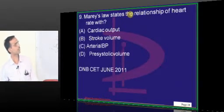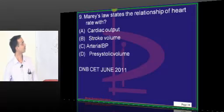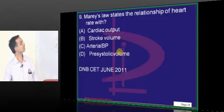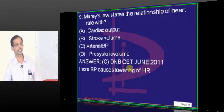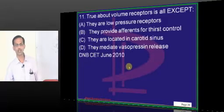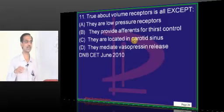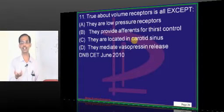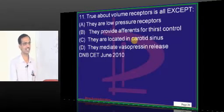Marey's law states the relationship of heart rate with arterial blood pressure — increased BP causes lowering of heart rate, that is Marey's law. What is Murphy's law? It has nothing to do with physiology; Murphy's law is a general statement which says if something can go wrong, it has to go wrong. So MCQ options can go wrong — just remember that while attempting MCQs.